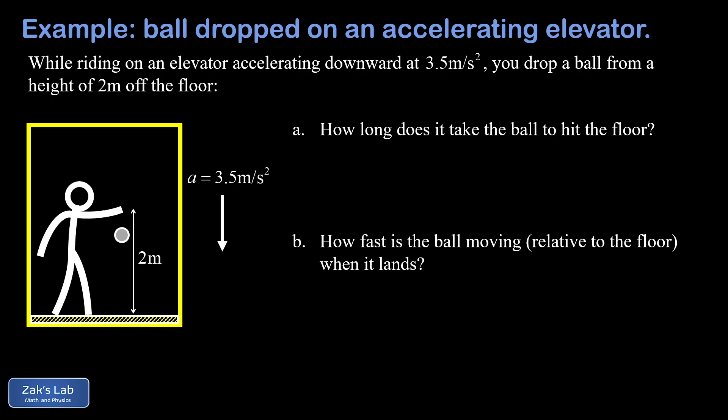The first solution is the standard stationary reference frame solution. We place our origin of coordinates at the initial location of the ball and call downward positive. The ball accelerates downward at 9.8 meters per second squared. This is much like a two-car kinematics problem: the ball as object one is chasing the floor as object two. Because the ball accelerates faster than the floor, it will catch up and hit the floor. We need to find the time before that happens, by writing the y-coordinate of each as a function of time.